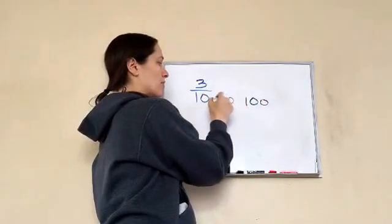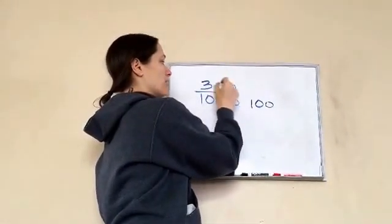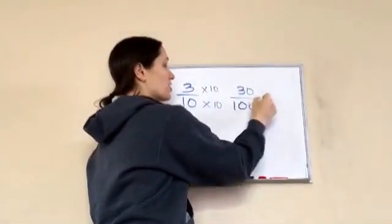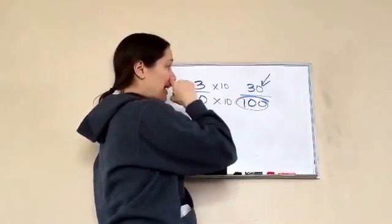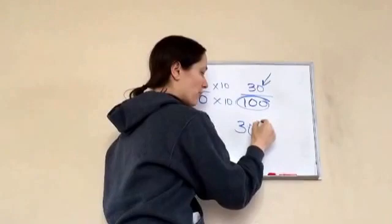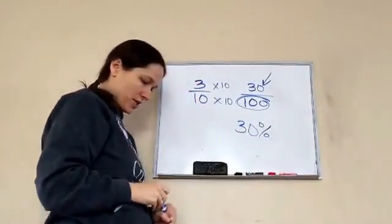Ten times ten is a hundred, and what we do to the bottom, we have to do to the top. Three times ten is 30. So, now it's over one hundred, so that means that what is written right here is the percent. So, that would mean that is 30%.